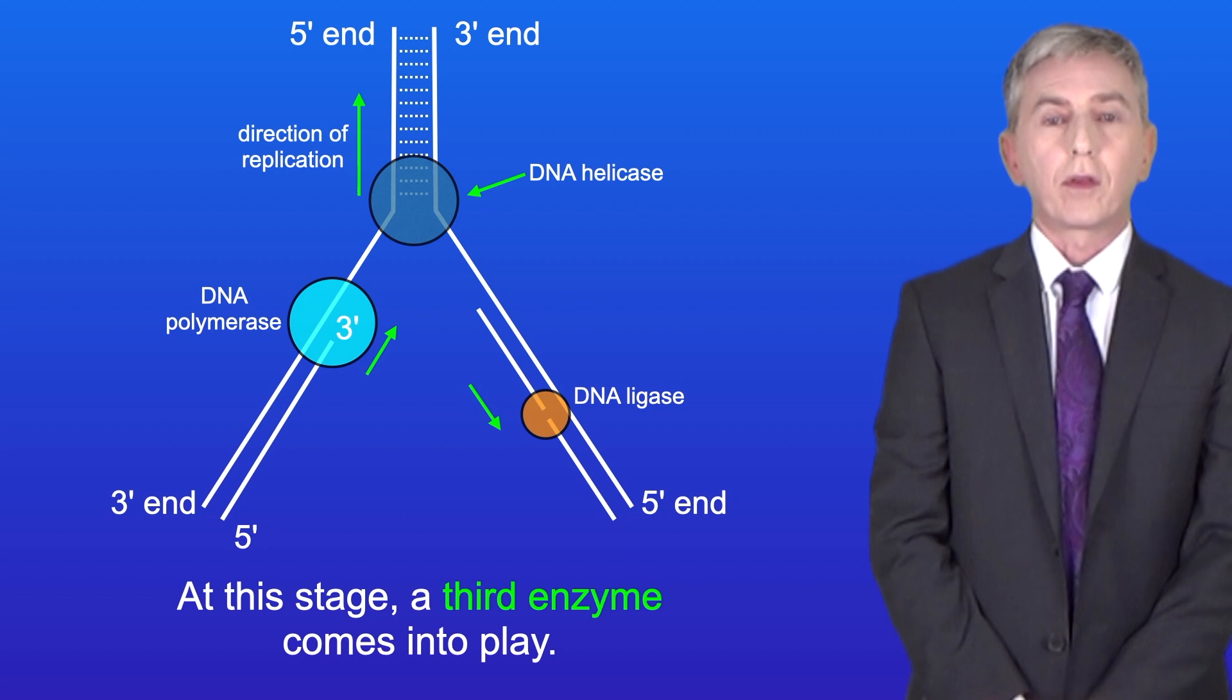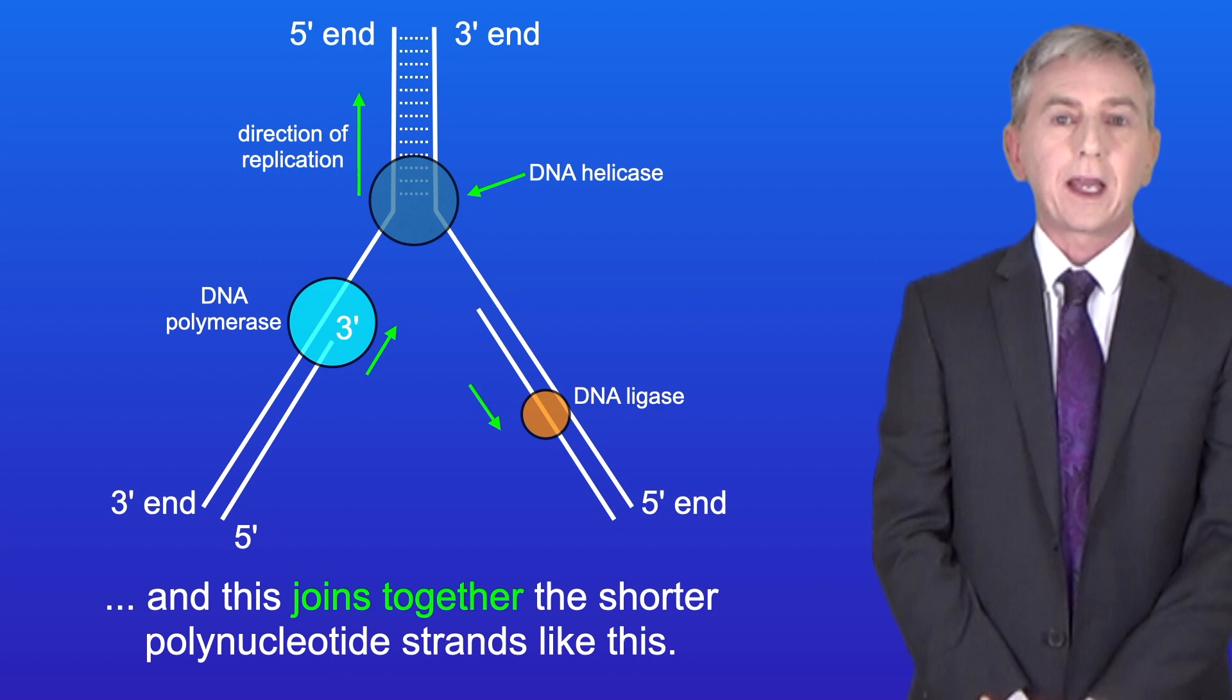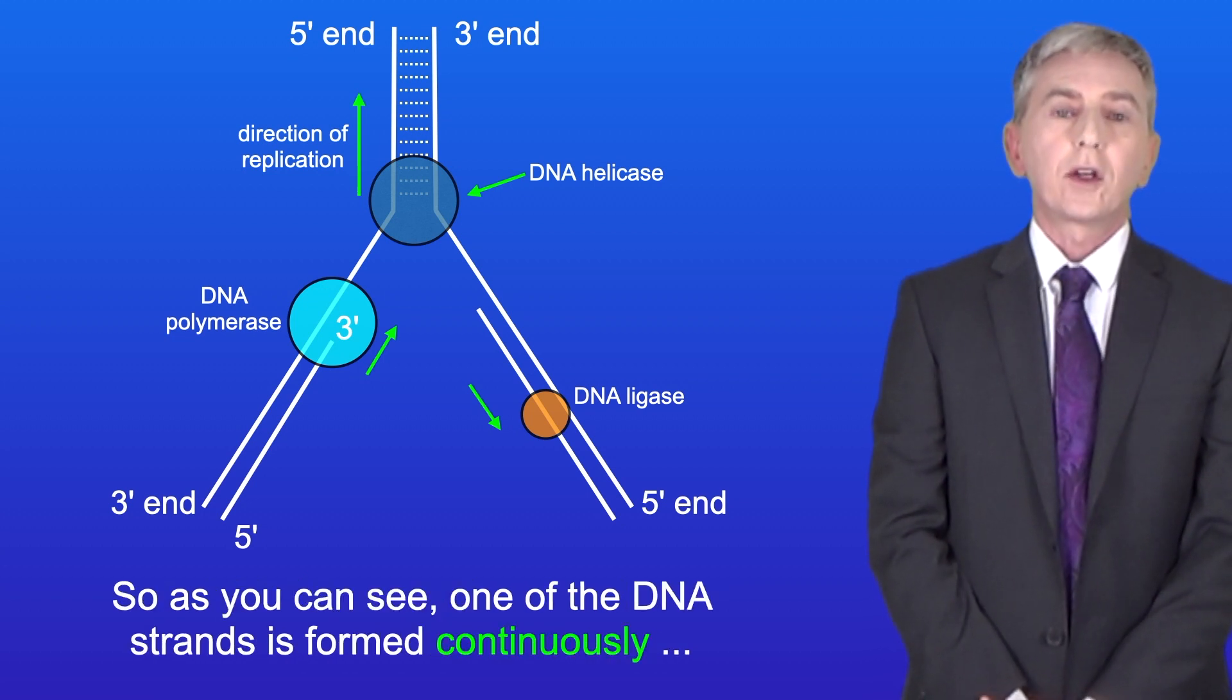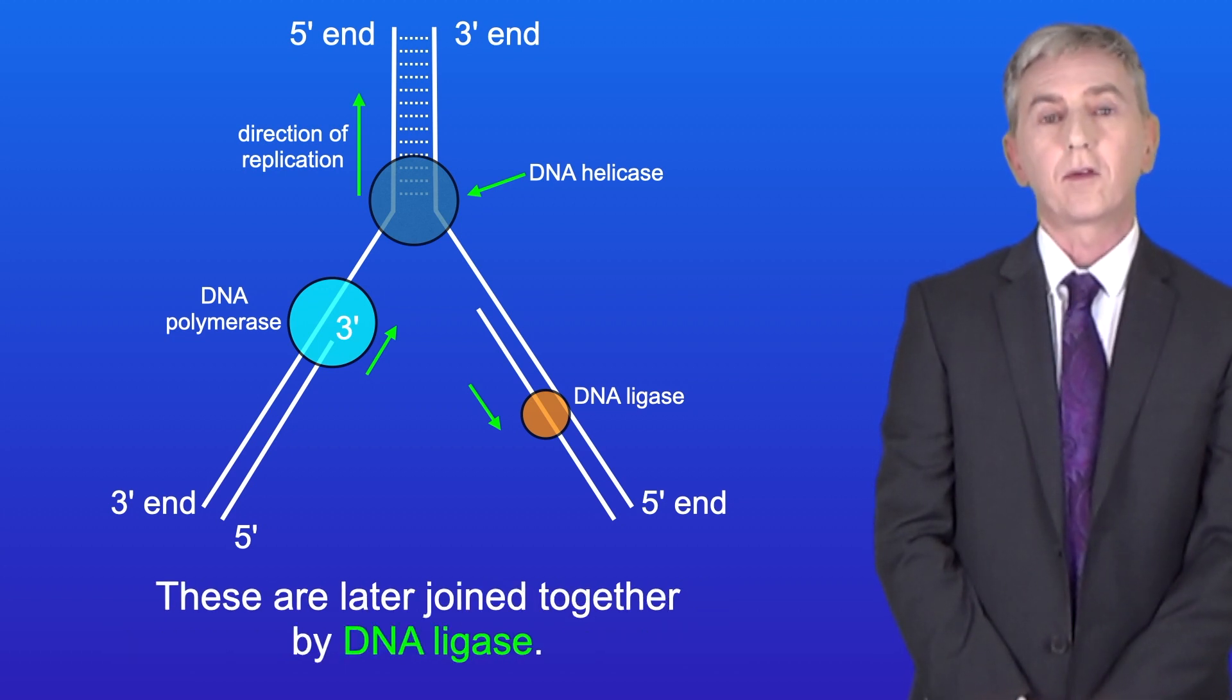At this stage a third enzyme comes into play. This is called DNA ligase and this joins together the shorter polynucleotide strands like this. So as you can see one of the DNA strands is formed continuously, whereas the other DNA strand is formed as a series of shorter strands and these are later joined together by DNA ligase.